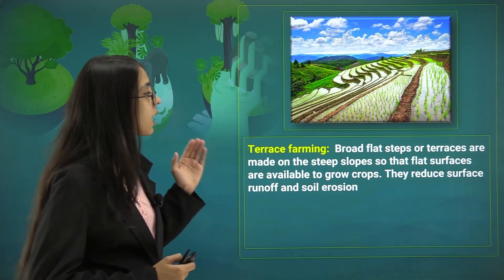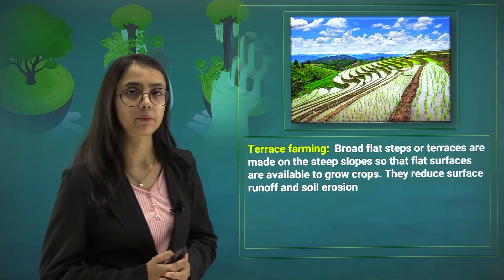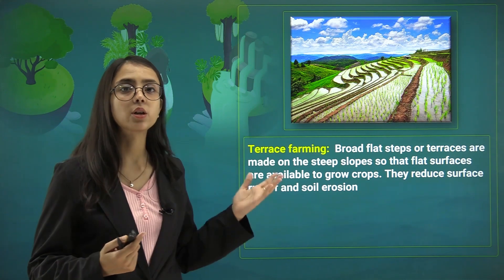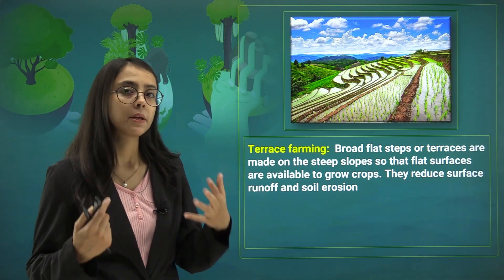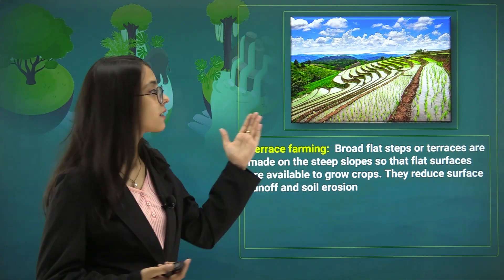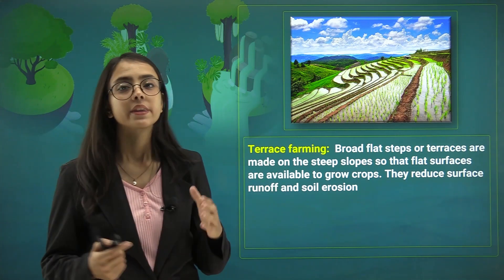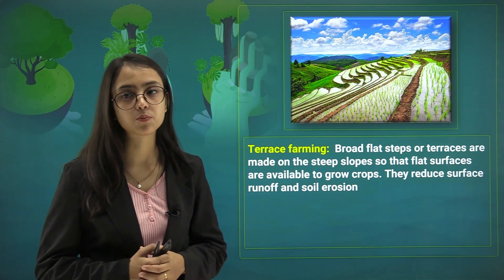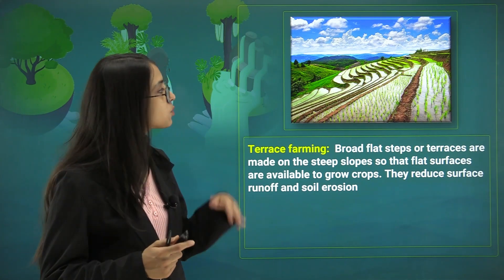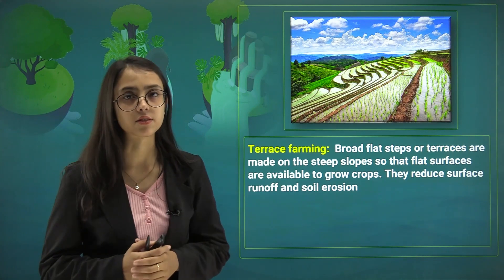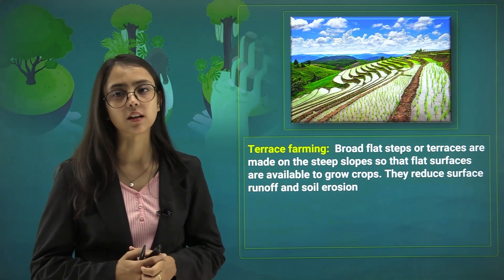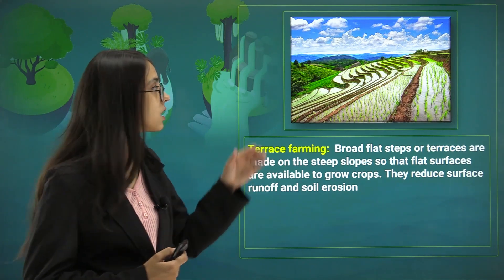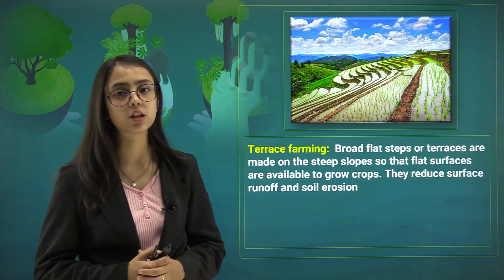Another method is terrace farming, used on mountain regions where it is very easy for the soil to erode. People build terrains or terraces — broad, flat steps made on steep slopes which are converted into rather flat surfaces. This is done so that crops can be grown on them, and this reduces the surface runoff and soil erosion.